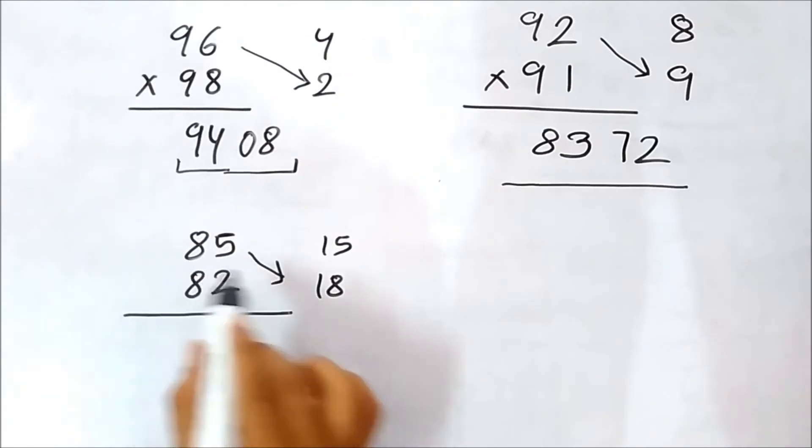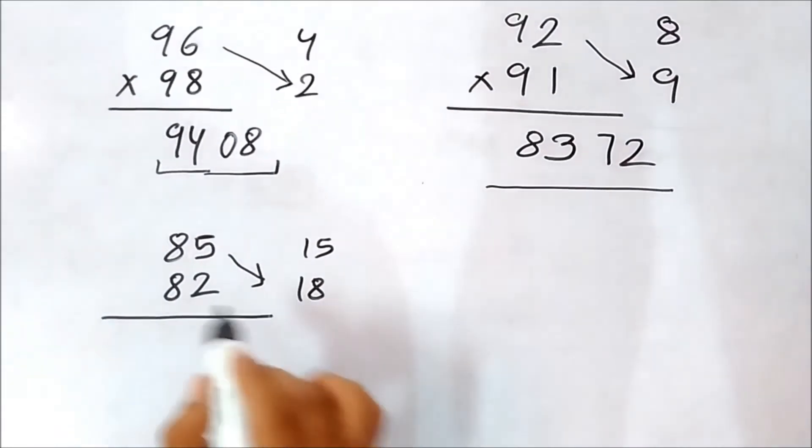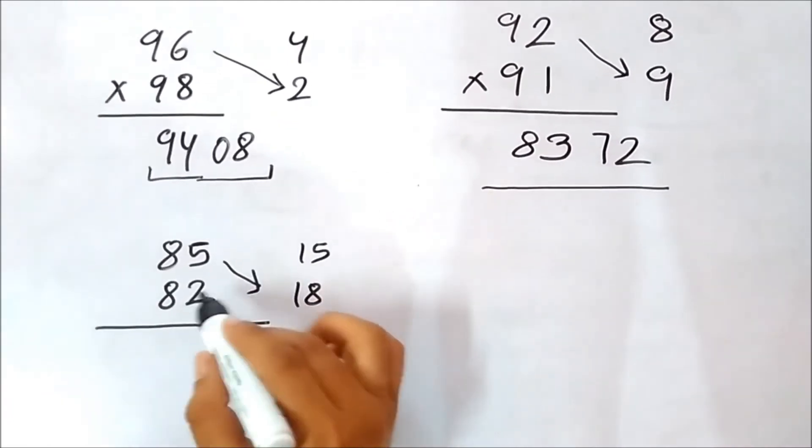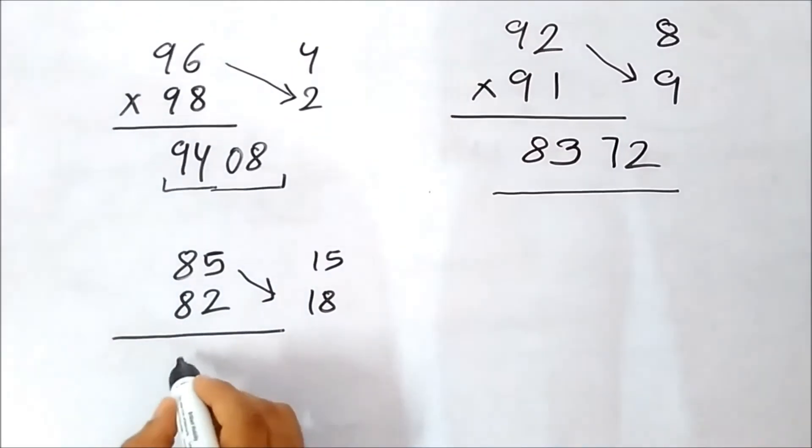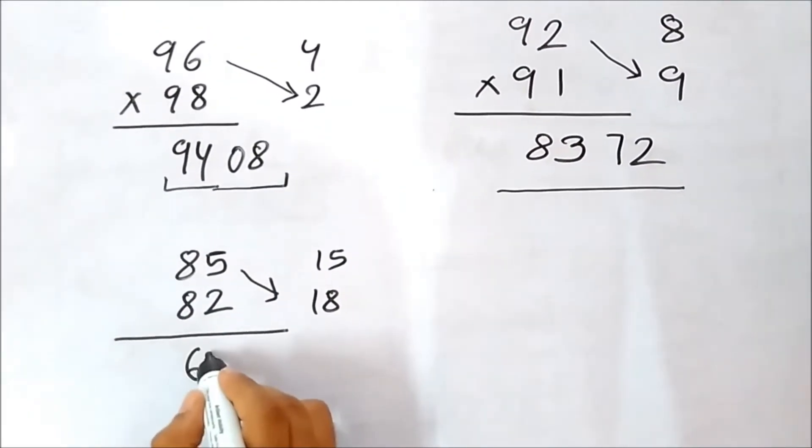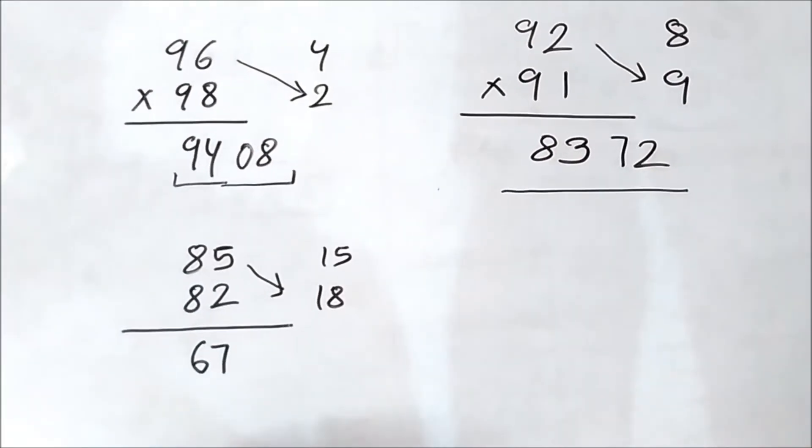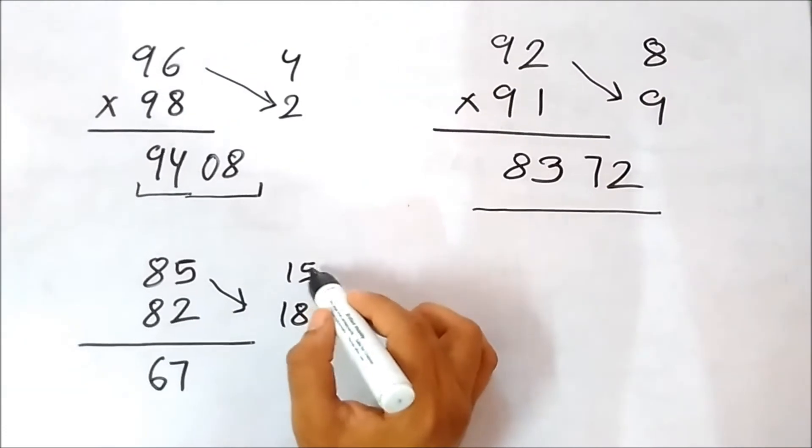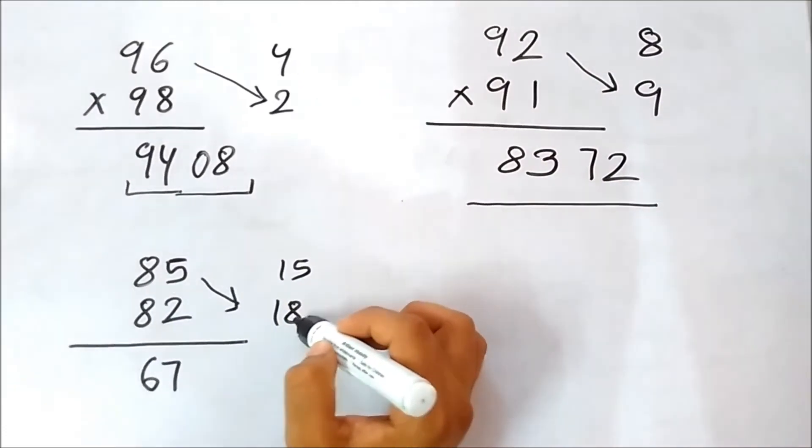Now subtract diagonally, 85 minus 18 or we can also do 82 minus 15. So anyhow, we will get the answer as 67. Now these are the first two digits we got.